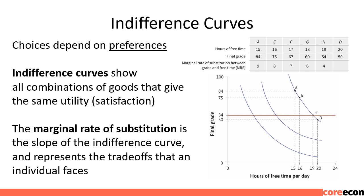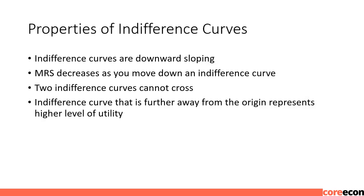As you have more free time and less of a final grade, for still another hour of free time you are willing to give up less and less of the final grade points. Properties of indifference curves: they are downward sloping; the marginal rate of substitution decreases as you move down an indifference curve; two indifference curves cannot cross, since that would mean one combination giving two different levels of utility; and an indifference curve further from the origin represents a higher level of utility.